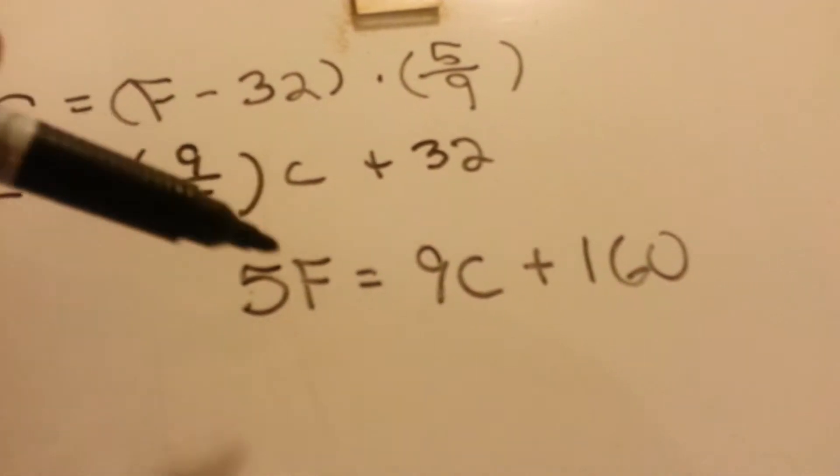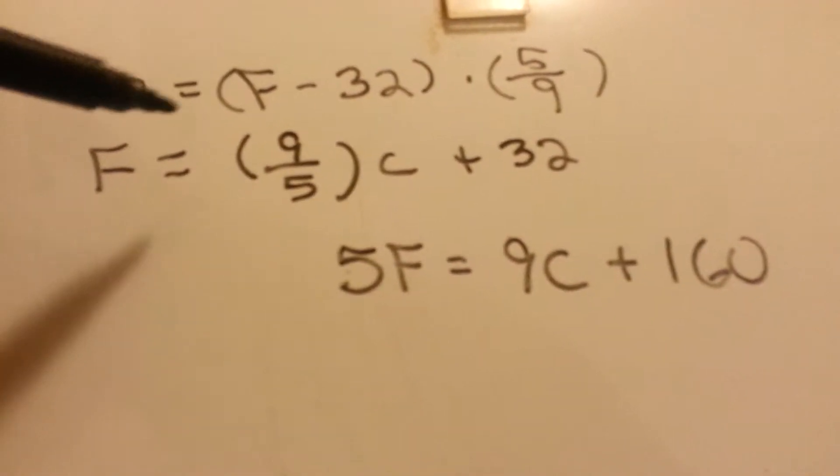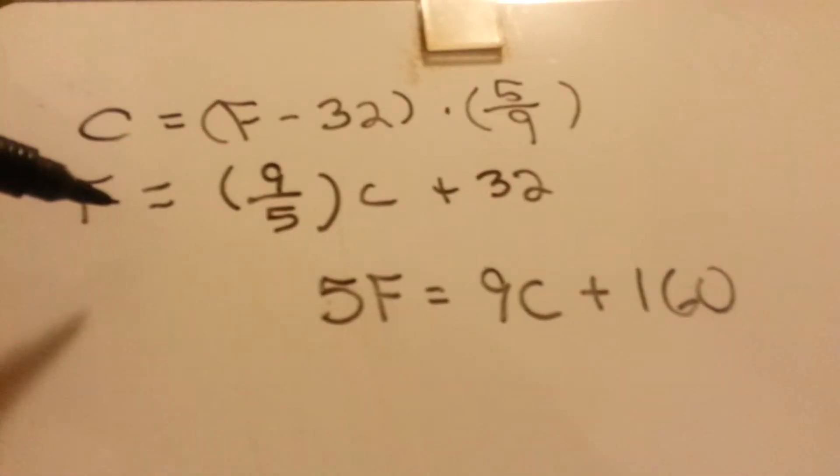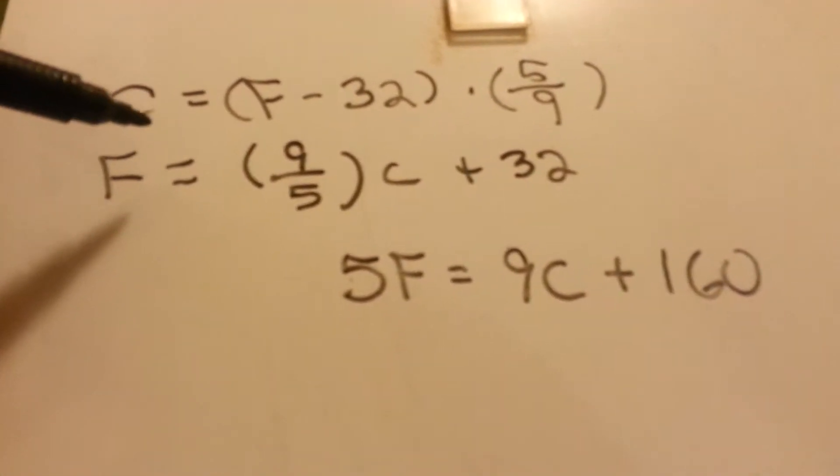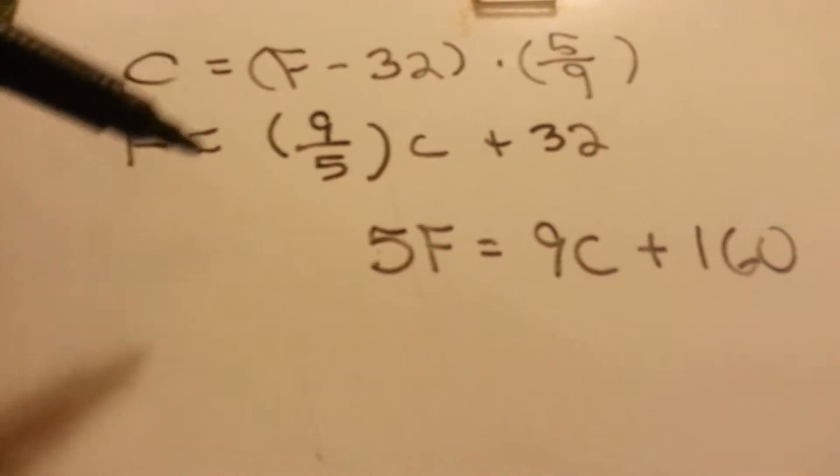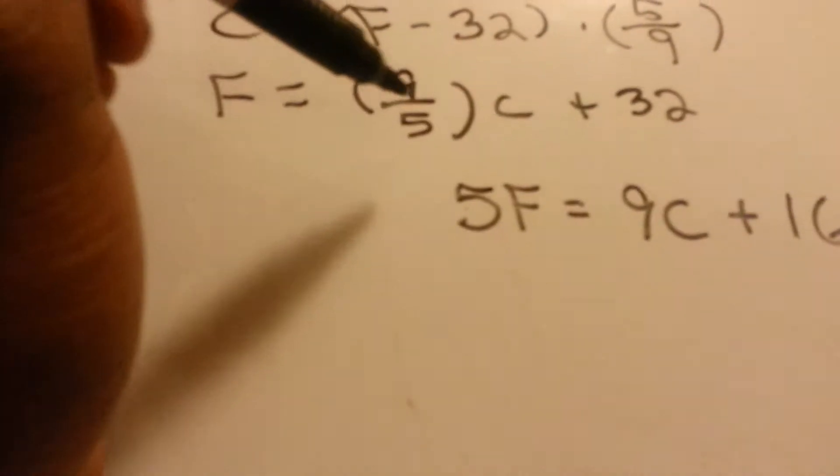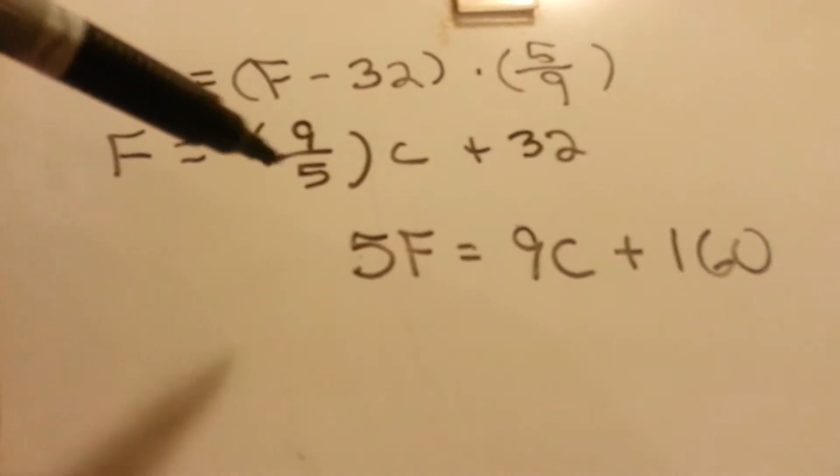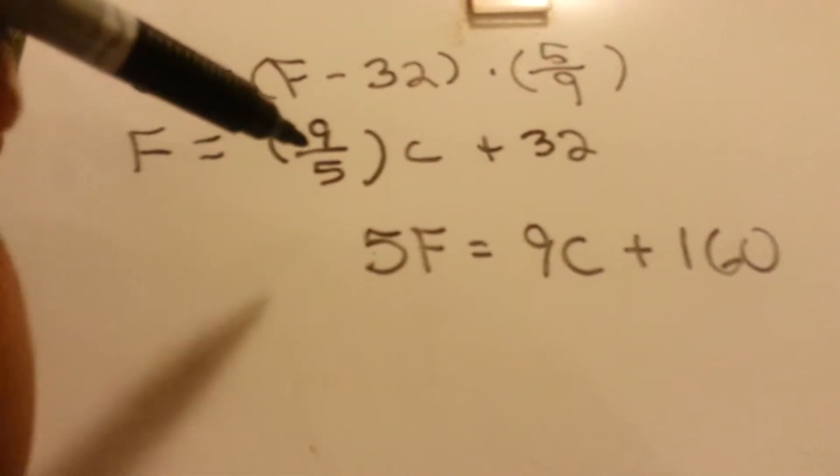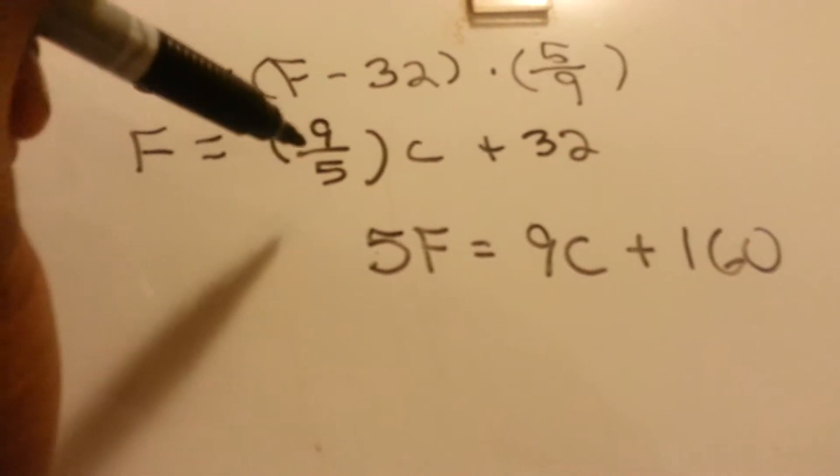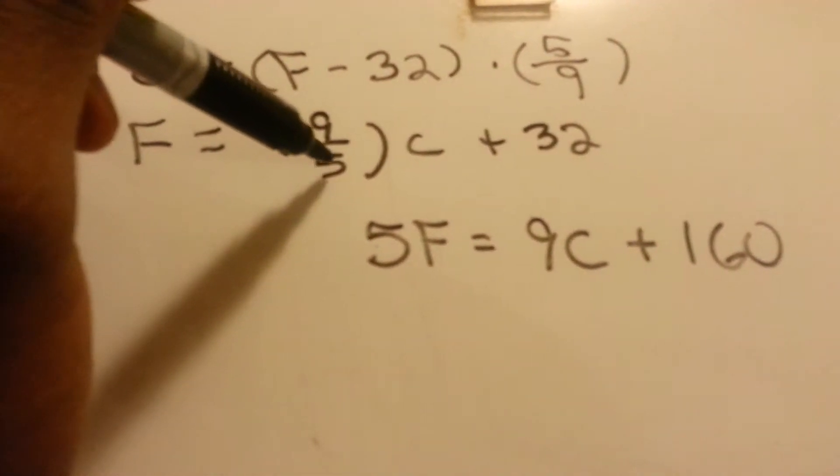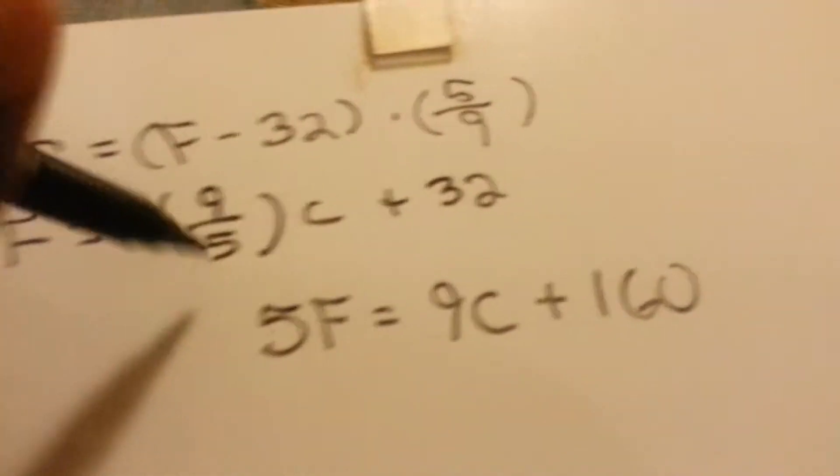And this formula is basically coming from simplifying this here. In case you don't notice, these two formulas are the inverse of each other. So to simplify the formula, you would have to multiply each side by 5 to get rid of this denominator.